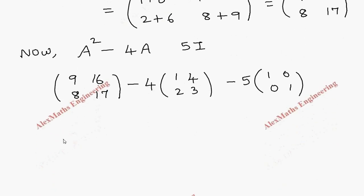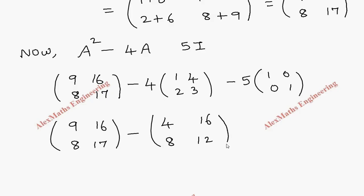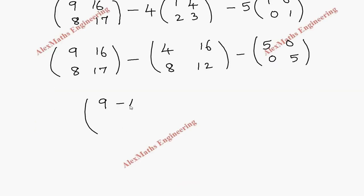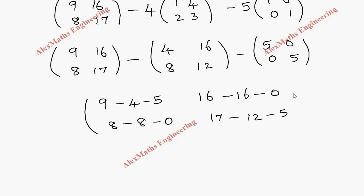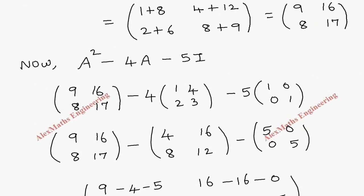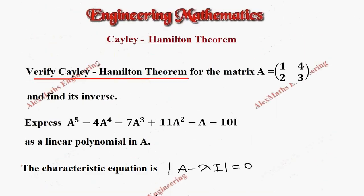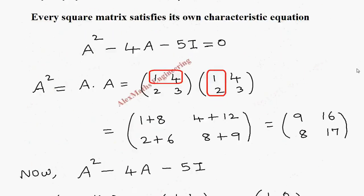We substitute A squared, A, and I. Keeping the first matrix as is, multiplying 4 inside gives [4, 16; 8, 12], and multiplying 5 inside gives [5, 0; 0, 5]. Combining into a single matrix: first element 9 minus 4 minus 5 equals 0, second element 16 minus 16 minus 0 equals 0, third element 8 minus 8 minus 0 equals 0, and last element 17 minus 12 minus 5 equals 0. So all elements become 0, giving the zero matrix. Cayley-Hamilton theorem is verified.